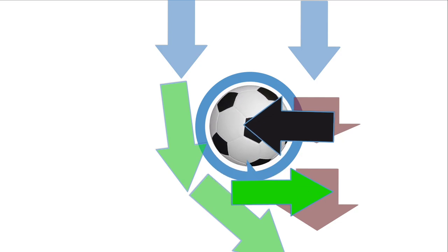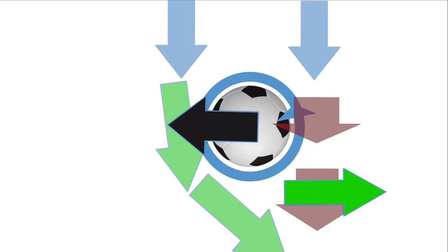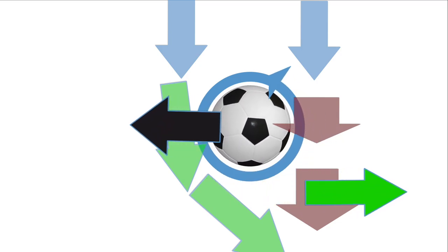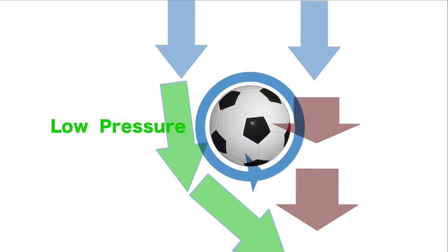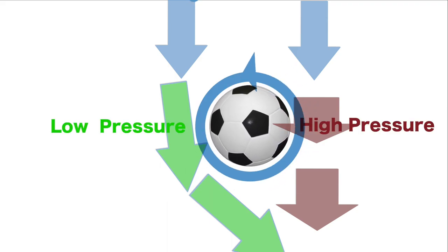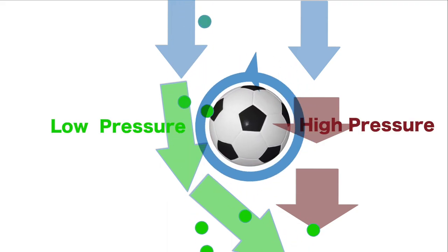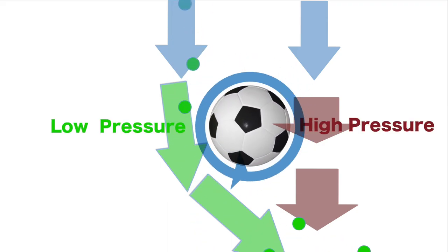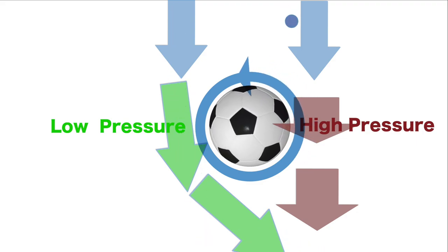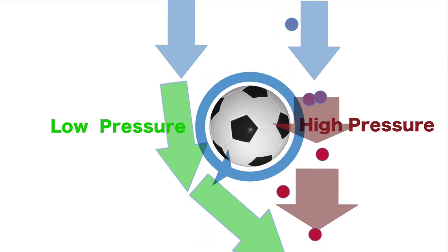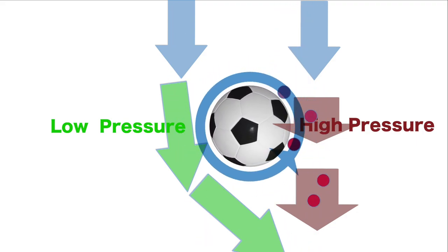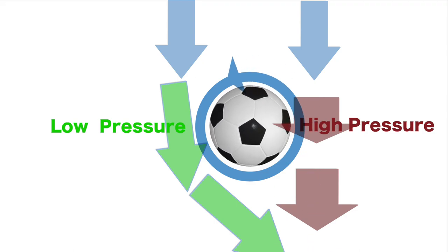Since the ball and boundary layer system pushes air to the right, the air pushes the ball equally and oppositely to the left. In other terms, the faster moving air particles on the left side of the ball create a low pressure area, while the right side of the ball causes air particles to decelerate and create a high pressure area. These pressure differences are significant enough to impart a force on the ball perpendicular to its axis of rotation.